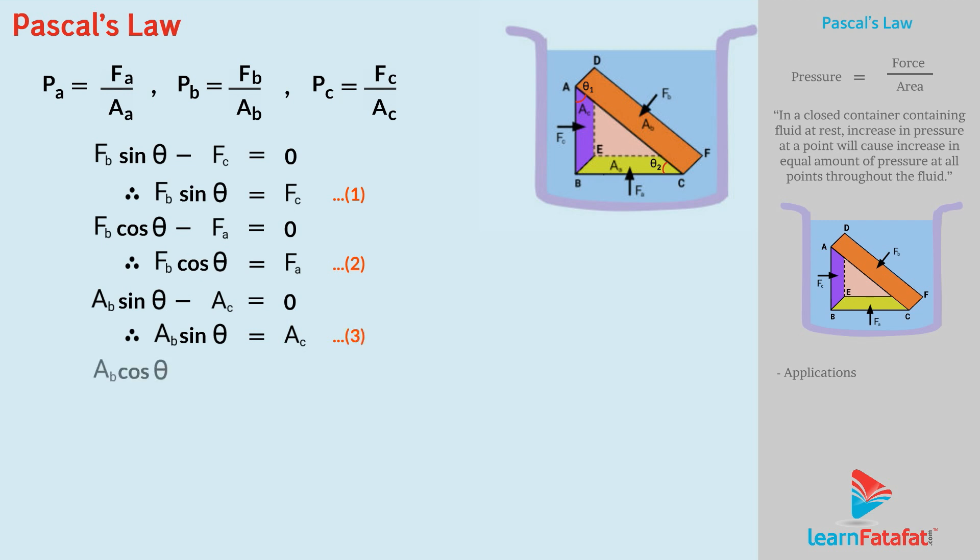And AB cos theta minus AA equals to zero. Therefore, AB cos theta equals to AA. Let's call this as equation number 4. Now, dividing equation 1 by equation 3, we get FB sin theta upon AB sin theta equals to FC upon AC.